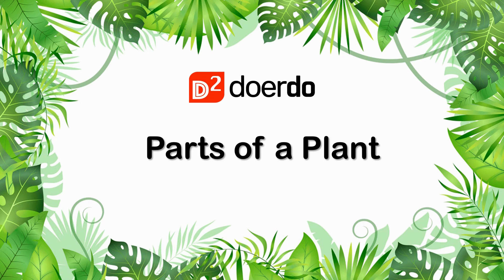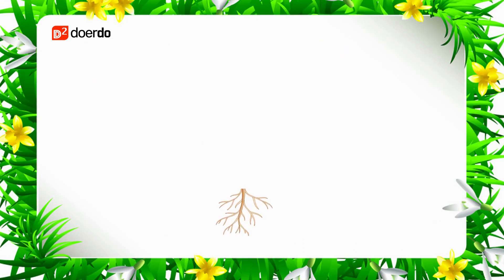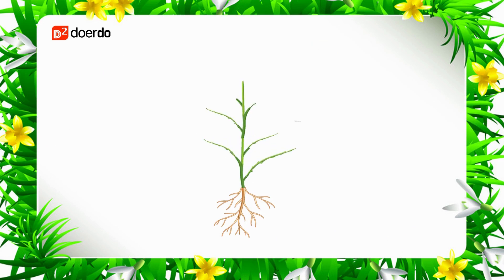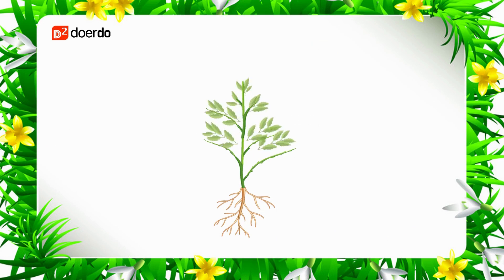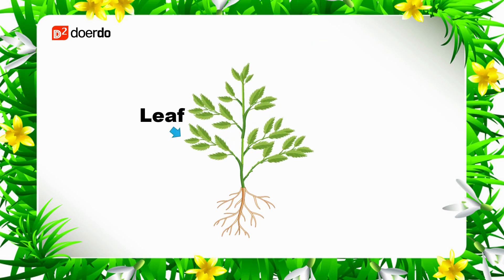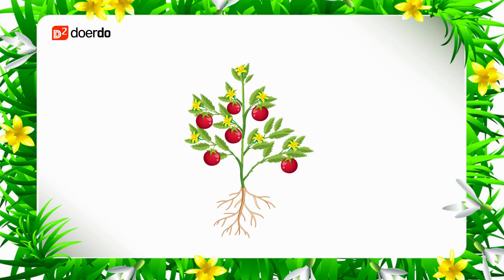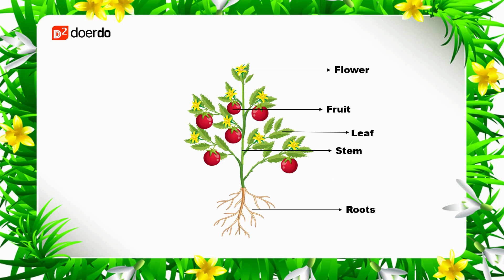First, let us learn the parts of a plant. This is the root. This is the stem. This is a leaf. You already know this one — it's a flower. And finally, this is the fruit. These are the parts of a plant.